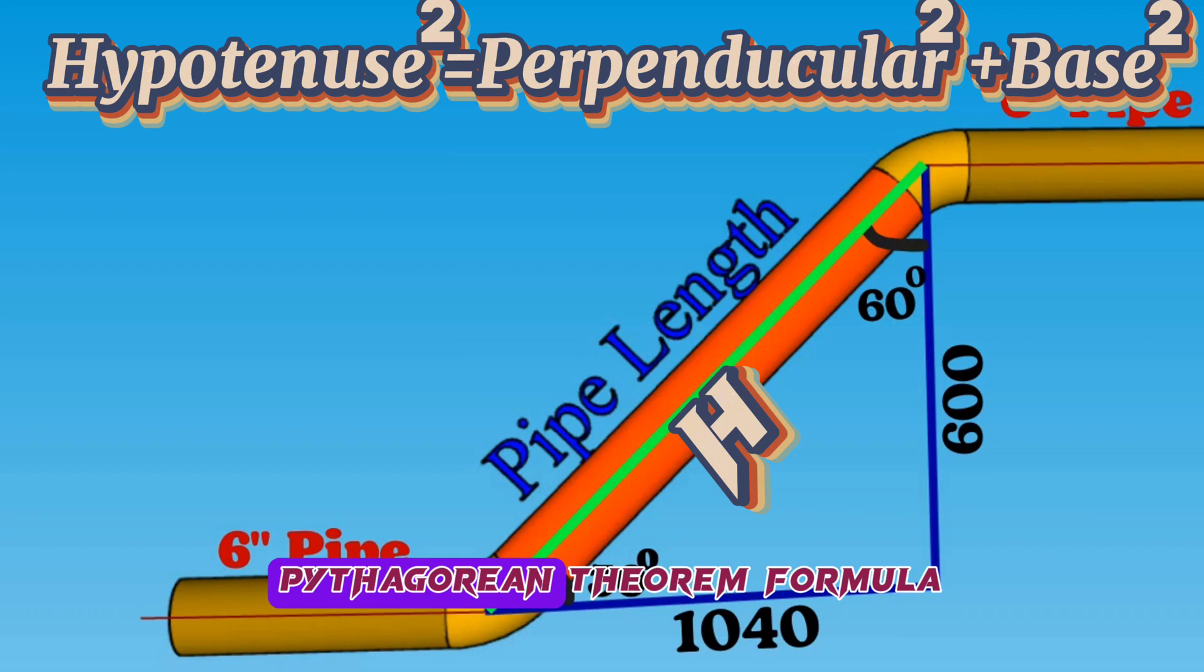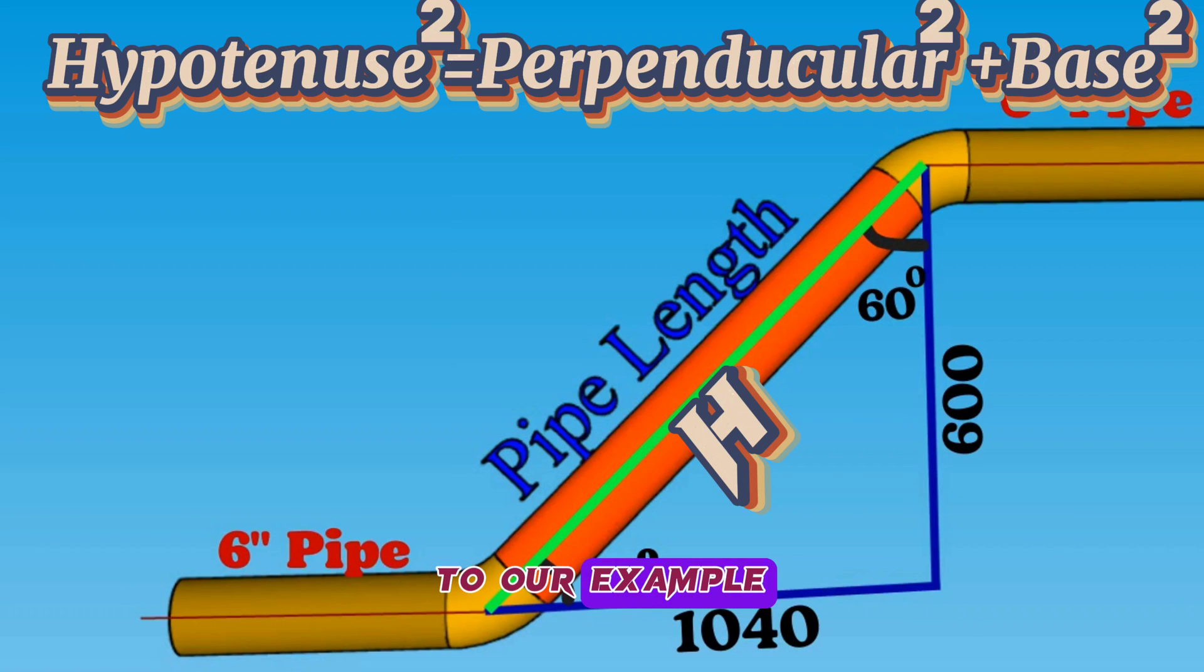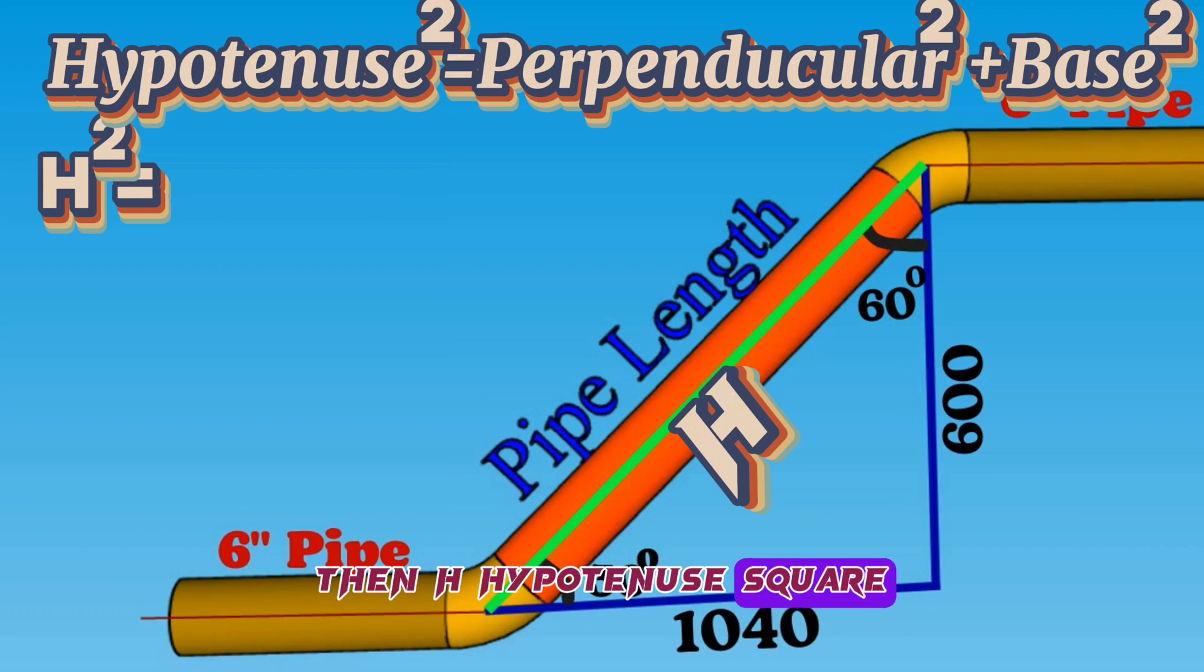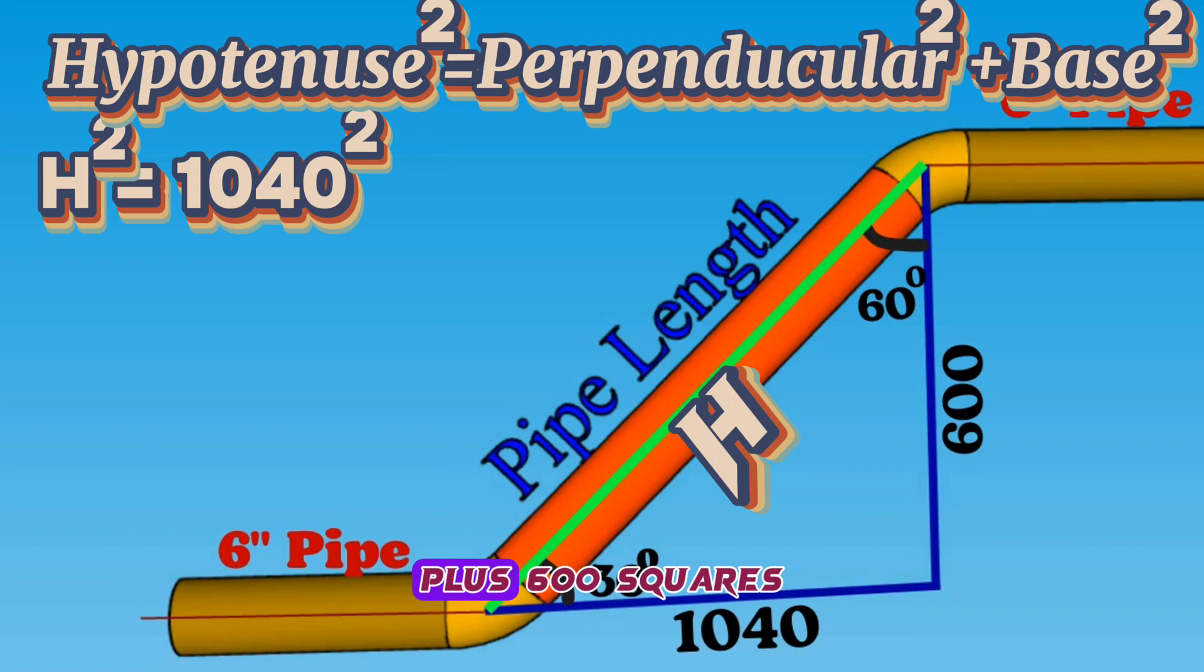If we apply the Pythagorean theorem formula to our example, then H hypotenuse square equals 1040 square plus 600 square.